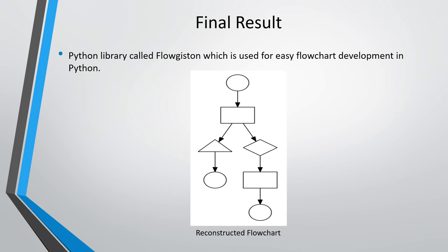Finally, to reconstruct the template, I used a Python library called Phlogiston, which is used for easy flowchart development in Python. I wrote a supporting class that takes in the classified shapes and their arrow relationships and does the required function calls in the Phlogiston library to construct the desired flowchart. The resulting reconstructed flowchart can be seen here. The position of the arrows and shapes may not be the same as the original flowchart, but the shape selections and the direction of the flow and the arrows is correct.